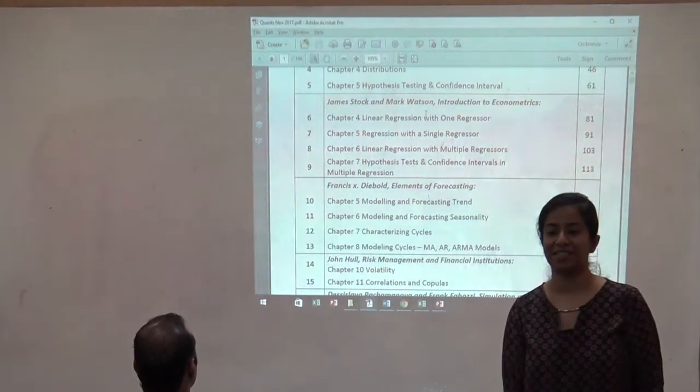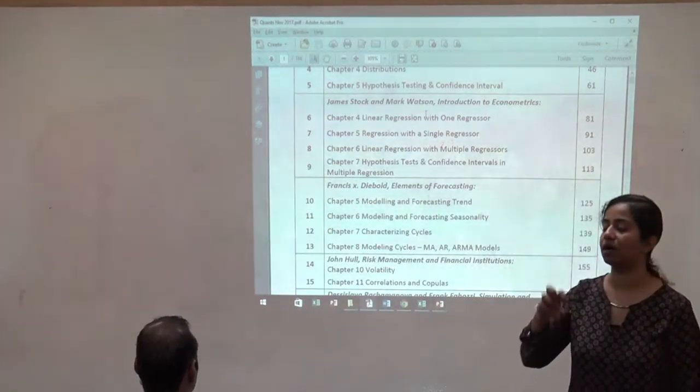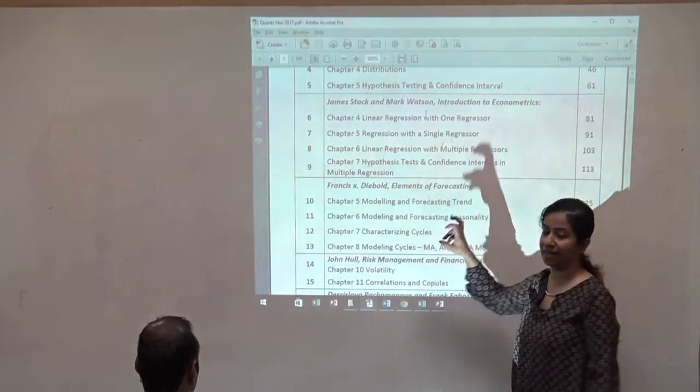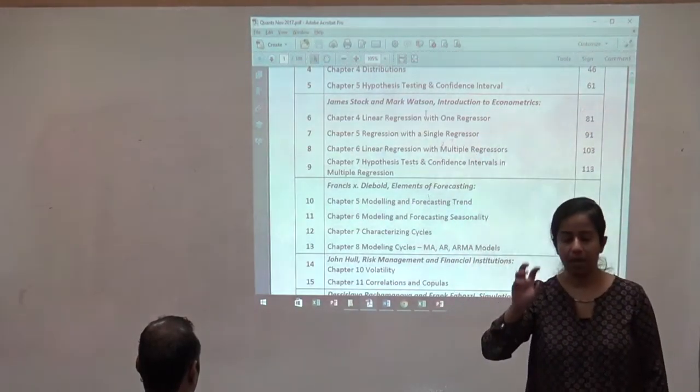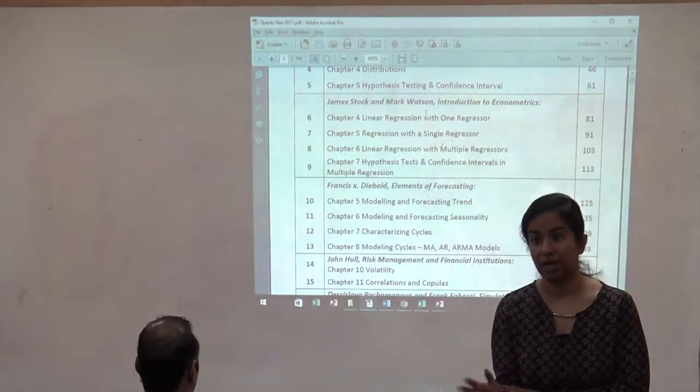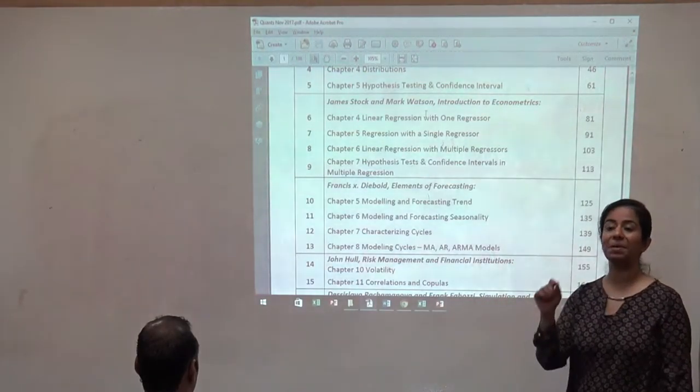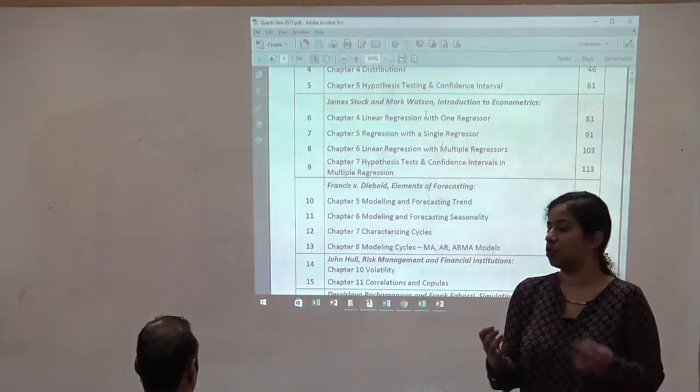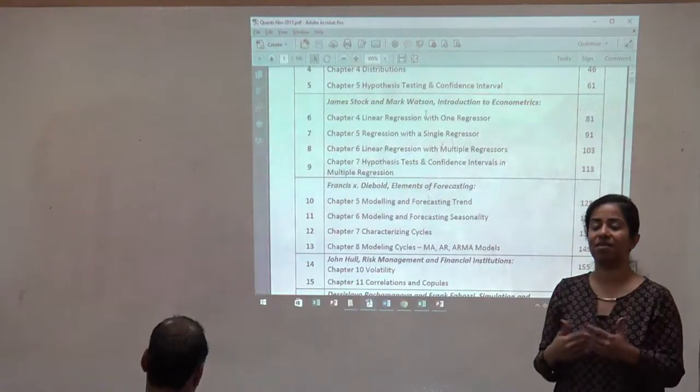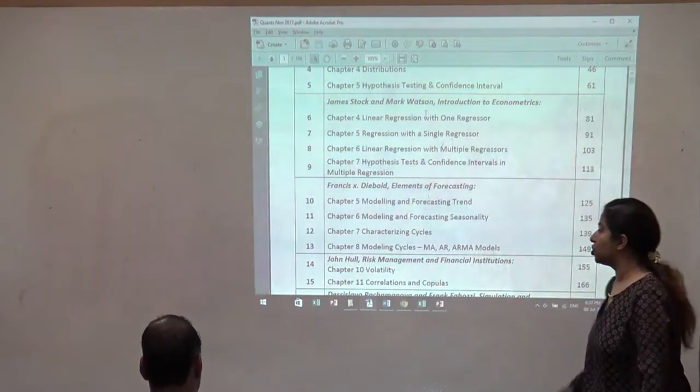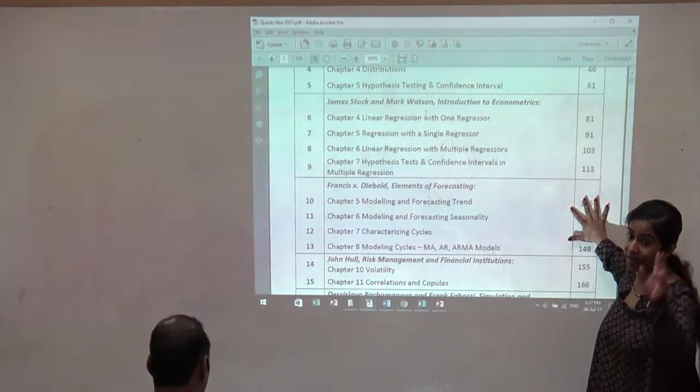So we're going to hit on time value money basics today. Next we're going to start off with probabilities and statistics. And you have a series of chapters from Michael Miller, chapters 2, 6, 3, 4 and 5. We're going to finish this block, the objective is within two classes. For those of you coming from a CFA background, regression is usually done in CFA level 2. So you will automatically feel the heat or the tempo pick up.